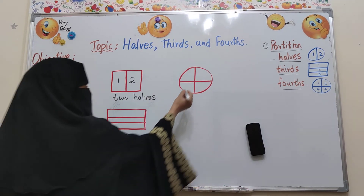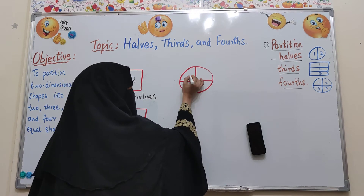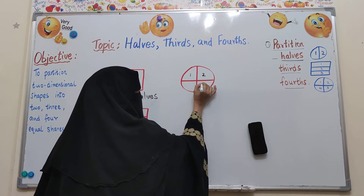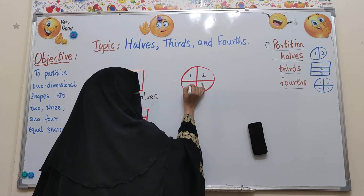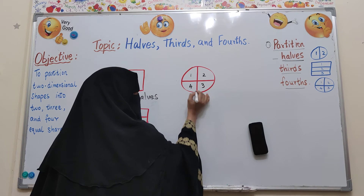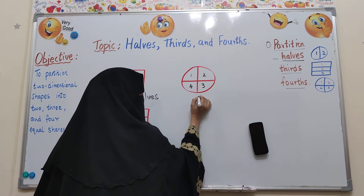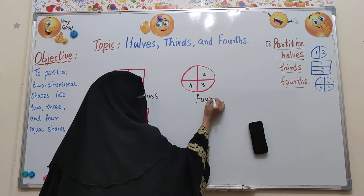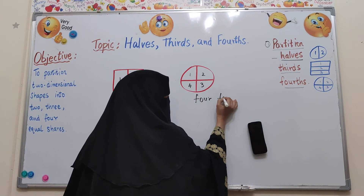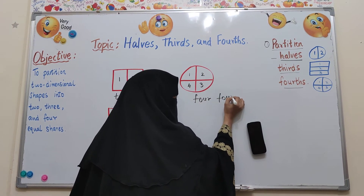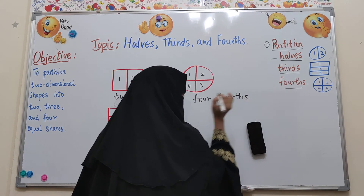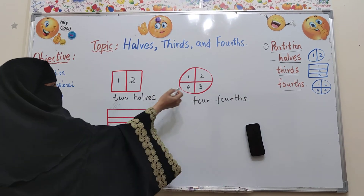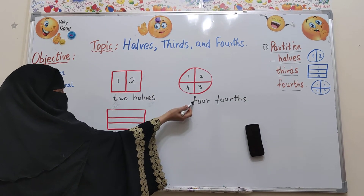And what about this? How many equal parts do you have here? One, two, three, four. That means it is four fourths. There are four equal parts.